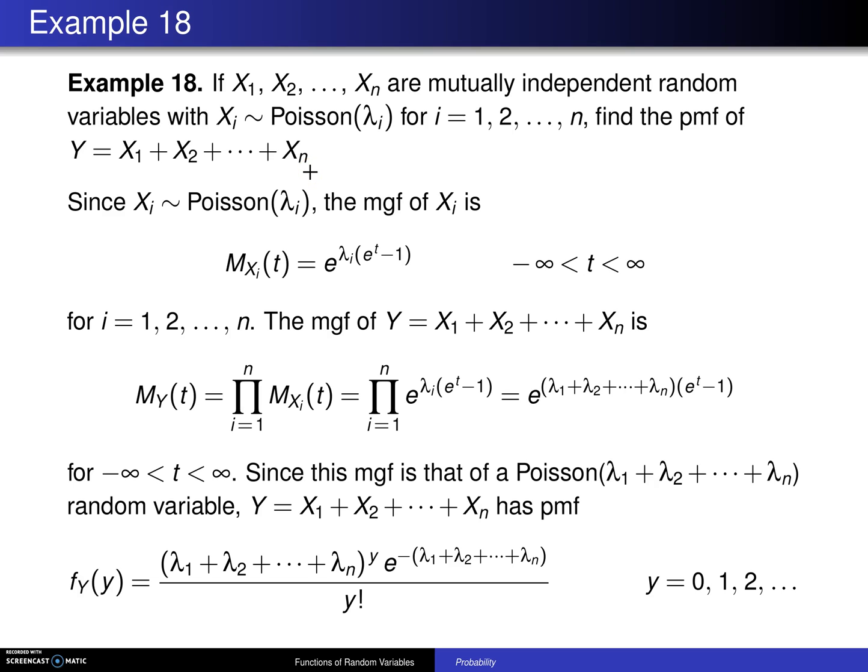Now in this particular case, notice that these are mutually independent, but they are not identically distributed. They all come from the same family, that is the Poisson family, but each one could potentially have a different parameter lambda sub i.